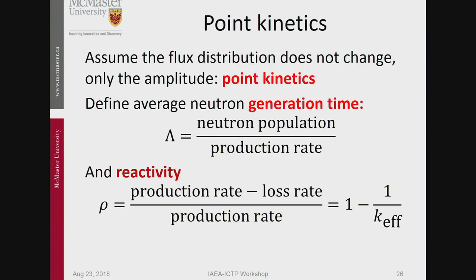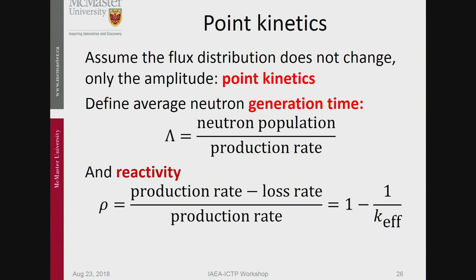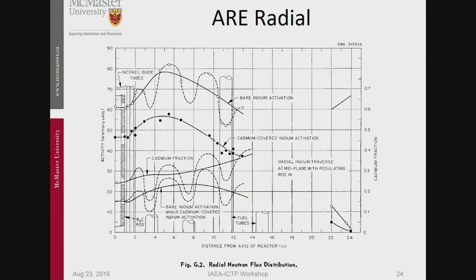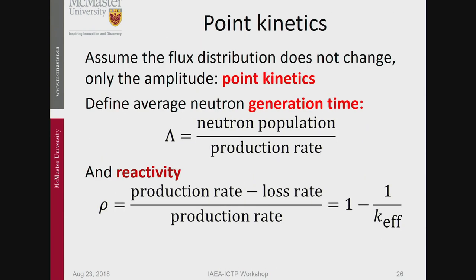That was the flux distributions, which is nice — if you have a reactor running, the flux is going great. But sometimes things happen to reactors and the flux goes up and down. In order to calculate that, we use something called point kinetics. In point kinetics we make the assumption that the flux distribution by itself doesn't change — it just gets bigger or smaller. The amplitude changes. In order to analyze that, we need a few parameters — the very important one is the generation time.